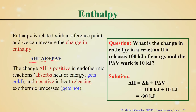If delta H is positive, it is an endothermic reaction — it absorbs heat, so the environment gets cold. If it is negative, it is a heat-releasing or exothermic process, and the environment gets hot. For example, if a reaction releases 100 kilojoules of energy and the P delta V work is 10 kilojoules, then delta H equals minus 100 plus 10, which is minus 90 kilojoules.